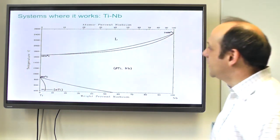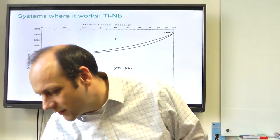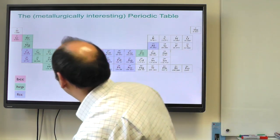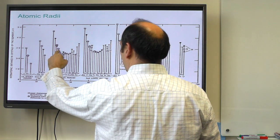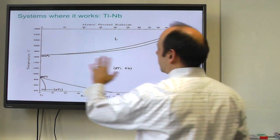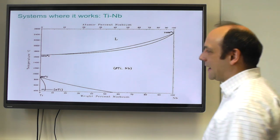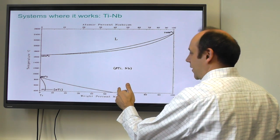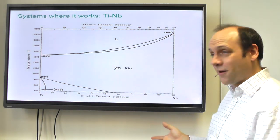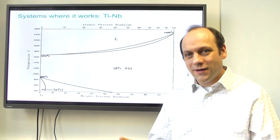Let's look at a system where this works nicely: titanium and niobium. They're very close in the periodic table and actually quite similar in size. What we see is a broad solubility between titanium and niobium — you can have complete solubility in the solid when titanium is in its BCC high-temperature state. When titanium is in its HCP phase, it doesn't work as well. BCC titanium can dissolve niobium completely because they're the same size and the same crystal structure. That's quite nice.